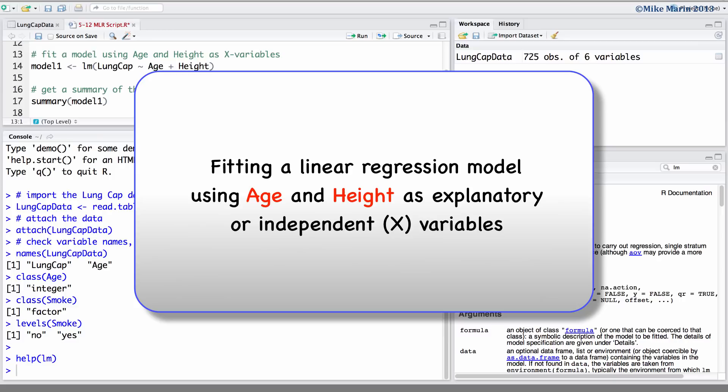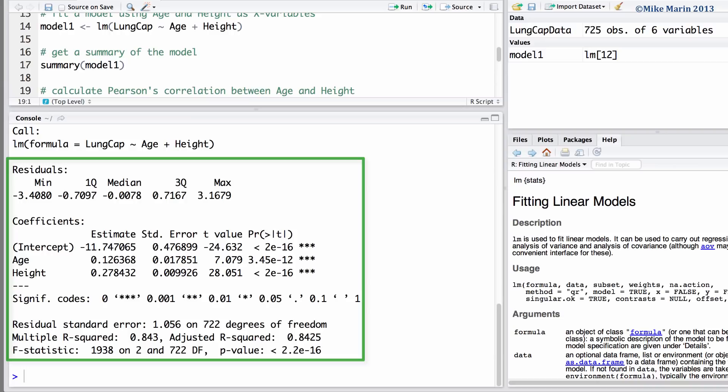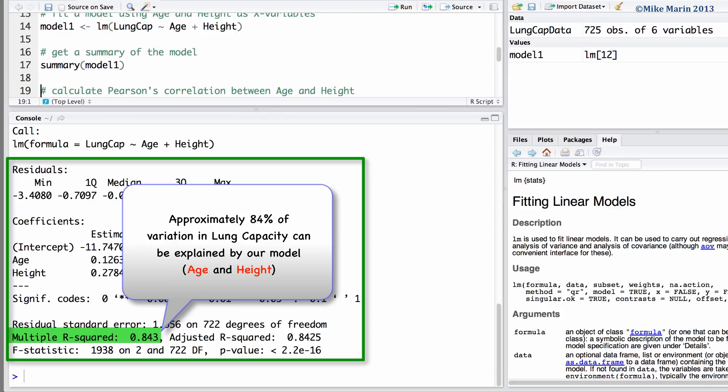First, let's fit a linear regression model using age and height as our explanatory or x variables and let's save this in an object called model1. We'll submit this command here. And now, let's ask for a summary of this model. Here, we can see the R-squared of 0.843.